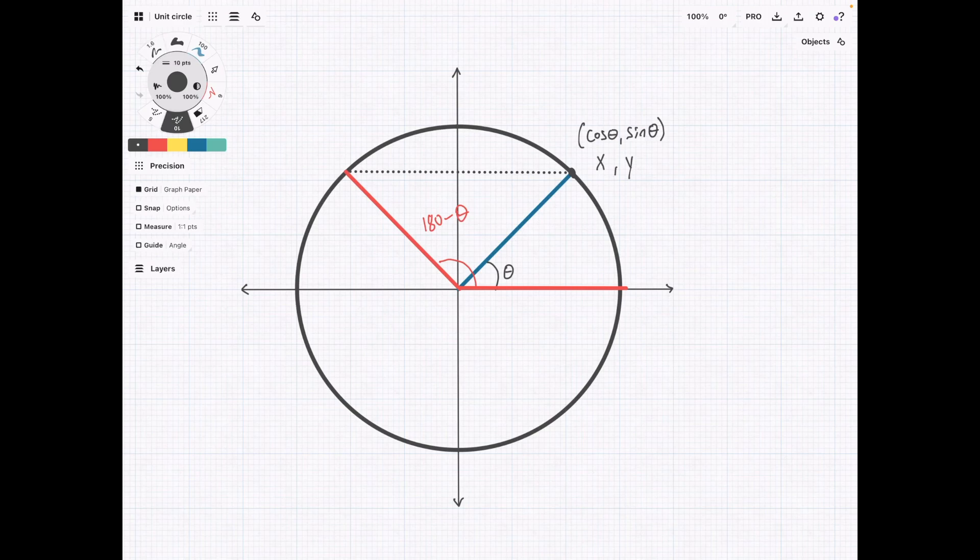Now, it's even more interesting because we can drop down a line like this and we can see that cosine of theta is going to be equal to some positive x value here. If we do the same thing for the supplementary angle, we'll see that this value has the same magnitude, but it's going to be negative. So we can write that as cosine of 180 minus theta equals negative x.